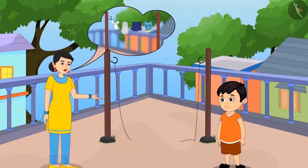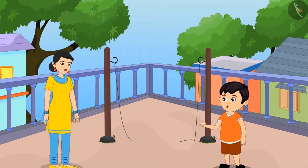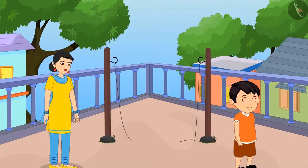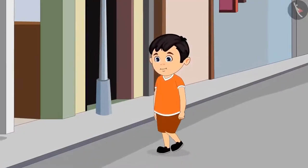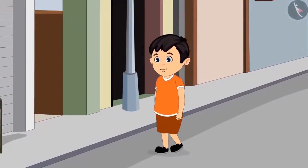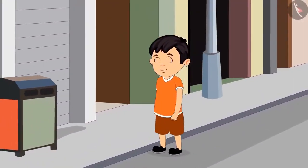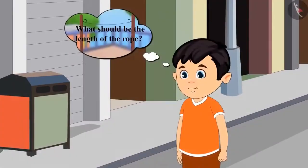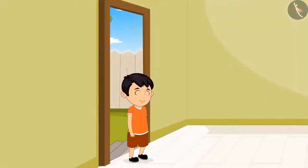Part 2. The clothesline rope is broken and they need to tie a new one. Chotu's mother asks him to go to the market and get a new rope. He agrees, but on the way he realizes he does not know the length of rope he needs, so he comes back home.